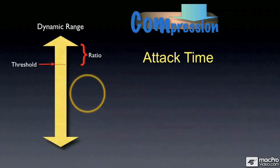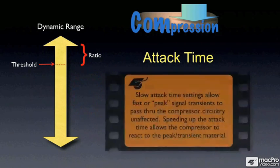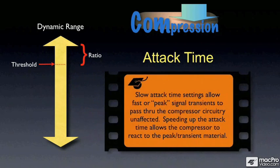This is a little confusing, so let me say it another way. Slow attack time settings allow fast or peak signal transients to pass through the compressor circuitry unaffected. Think of a compressor as like closing a door.